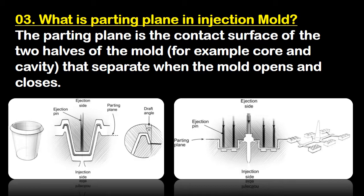What is a parting plane in an injection mold? The parting plane is the contact surface of the two halves of the mold — for example, core and cavity — that separates when the mold opens and closes.